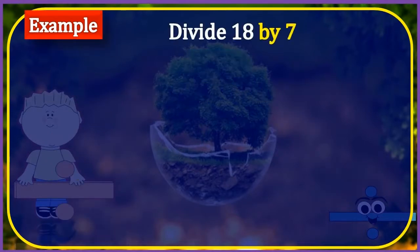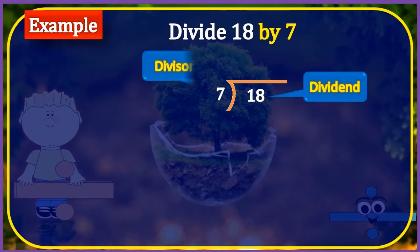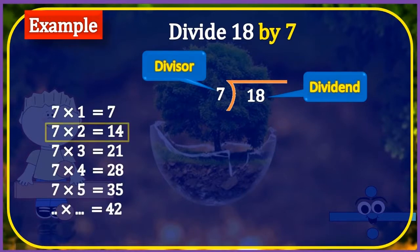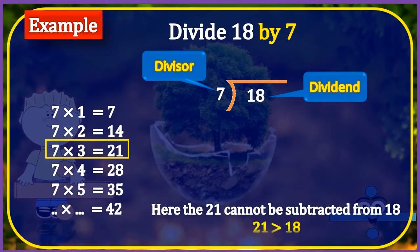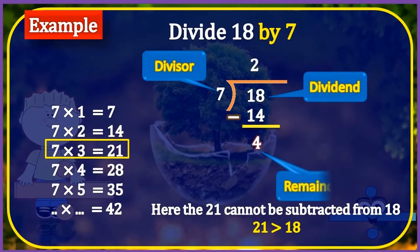Now divide number 18 by 7. Here, we have 18 as the dividend and 7 as the divisor. So on counting the table of 7, we get 14 at second time and then 21 at the third time. Here, the number 21 cannot be subtracted from number 18 because it is greater than 18. So we will write the number 14 here and the quotient 2 here. Now after subtracting 14 from 18, we have 4 as the remainder. Now we stop because the divisor 7 cannot divide the number 4.